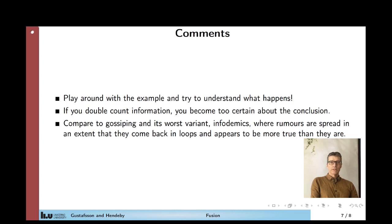So in the next lecture we'll talk about safe fusion. And that's about how to avoid double counting information. So suppose that you have two different estimates, but they are dependent. How can you treat that case? And that can be compared with gossiping when you spread around a rumor and the rumor comes back to you and you believe it's more true when you hear it many times compared to if you just hear it once.